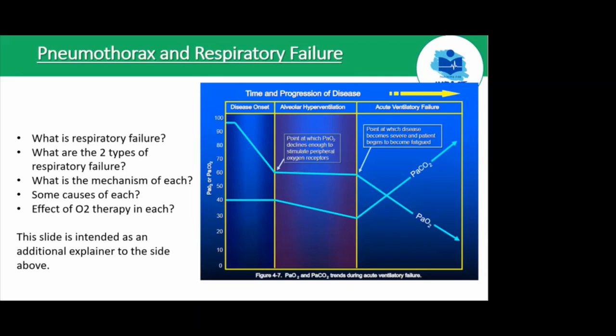Other lung conditions leading to type 2 respiratory failure include chronic sequelae of COPD, asthma, pulmonary fibrosis, and anything that reduces respiratory drive to clear CO2 — such as neurological conditions or drugs.